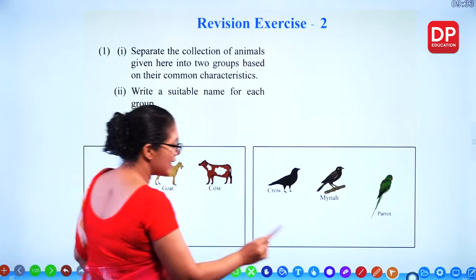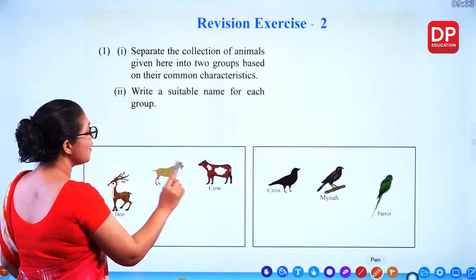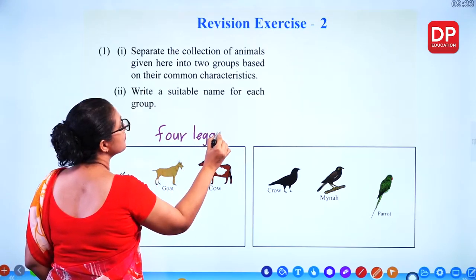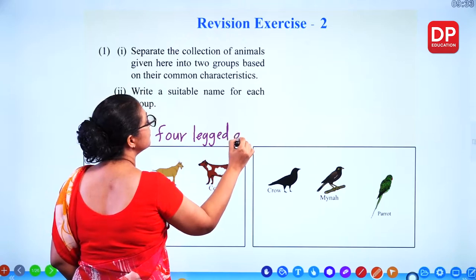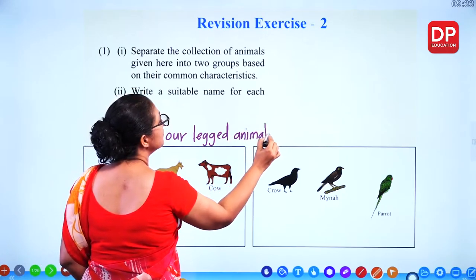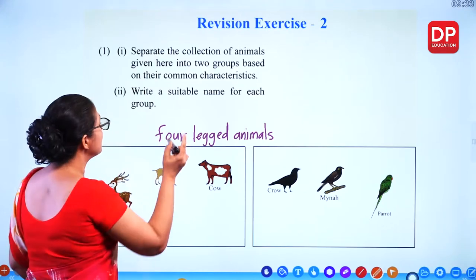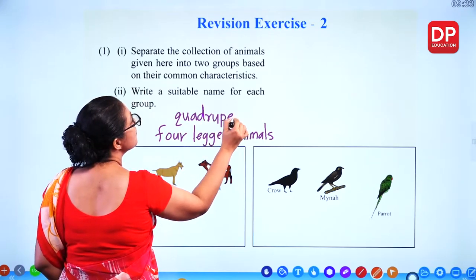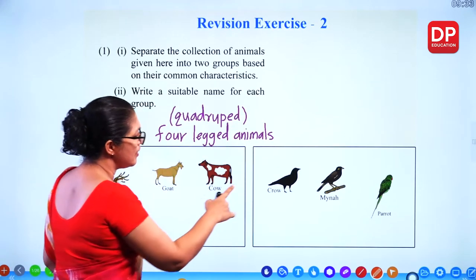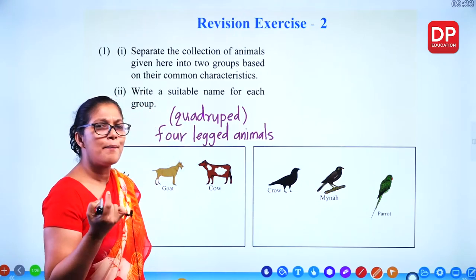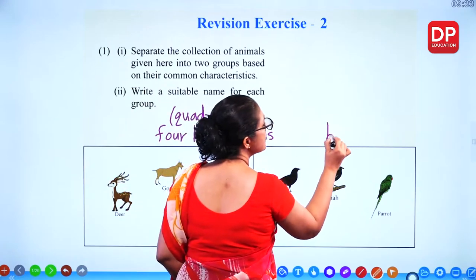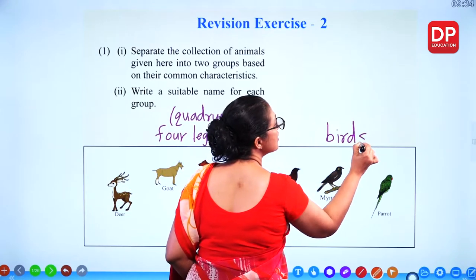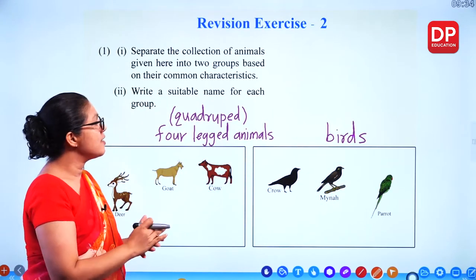Here you can see four-legged animals, so we can group them as four-legged animals, or we can say quadruped. And crow, mina, parrot — these are birds. So there are two groups: birds and four-legged animals.